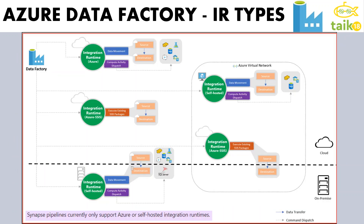This is a map that describes all three integration runtime types. For the first one, Azure integration runtime, we have data movement and compute activity dispatch. For data movement, if both the source and destination are in the cloud, and we dispatch the activity within that environment, everything happens on Azure itself. You can connect to different data sources, and this is called Azure integration runtime.